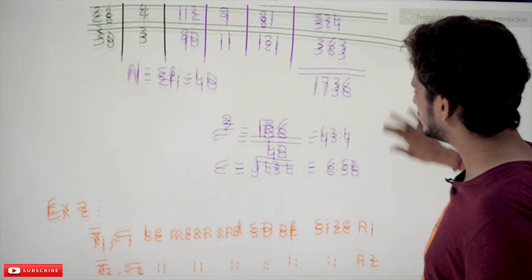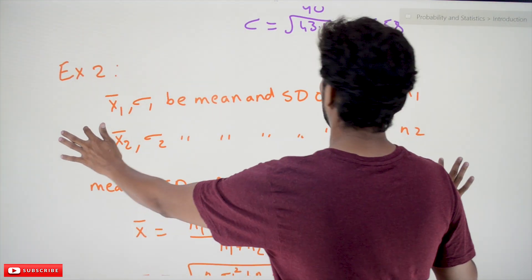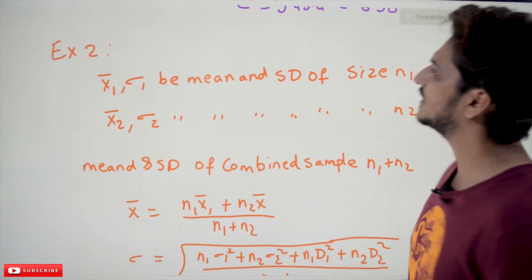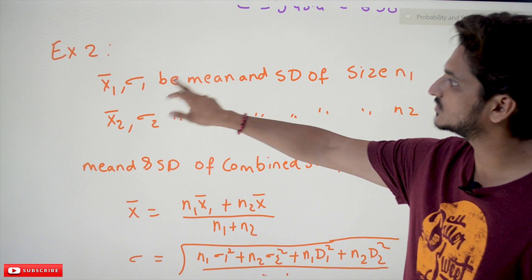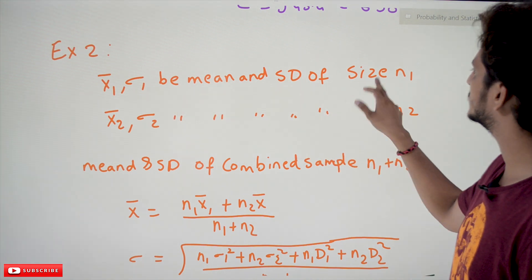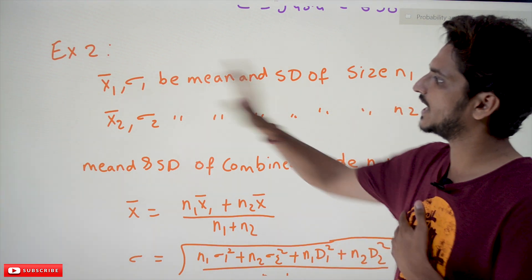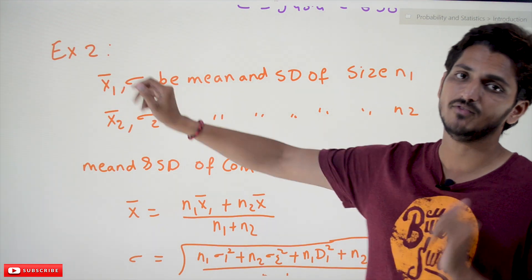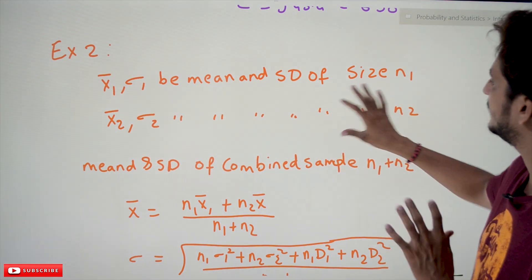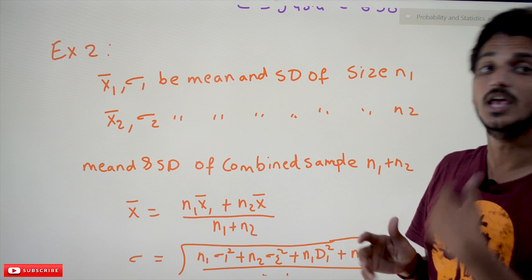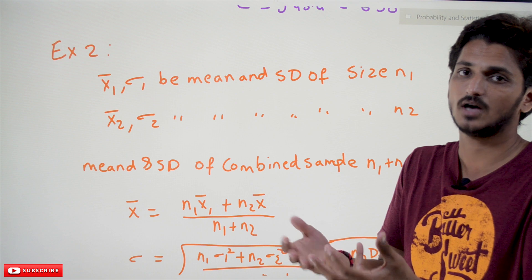Coming to the next example, it is very important to understand. Given x̄₁ and σ₁ — the mean and standard deviation of a sample of size n₁ — and x̄₂ and σ₂ — the mean and standard deviation of n₂ samples — if you want to identify the mean and standard deviation of the combination of these two samples, how do we find that?